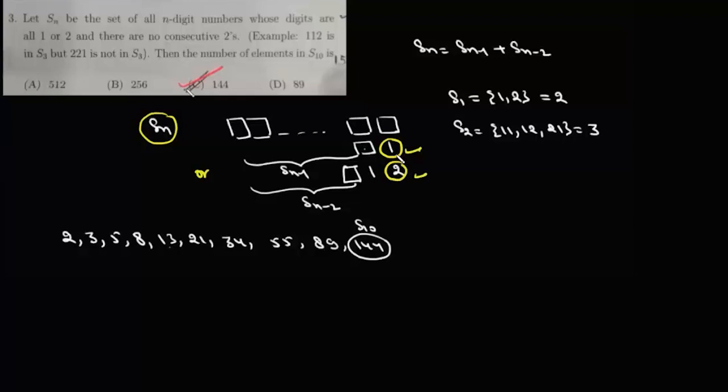If it is 1, then there is no restriction, so the problem reduces to arrangements of 1 and 2 in the remaining n-1 places, which is SN-1. But if the last digit is 2, we know that 2 cannot appear consecutively, so the number before 2 has to be 1. So these two places are fixed. Now we have to arrange 1s and 2s in the remaining n-2 places and it can be done in SN-2 ways.